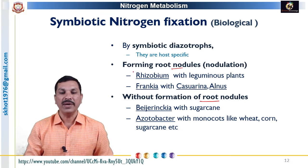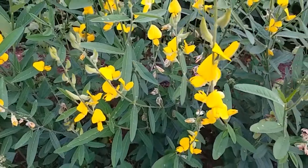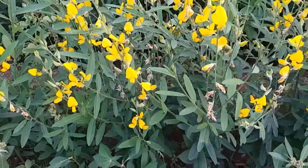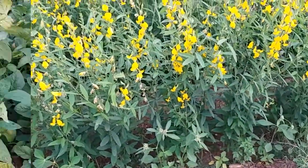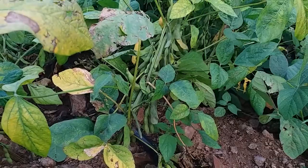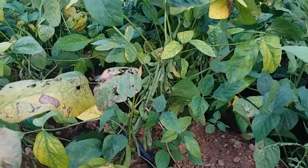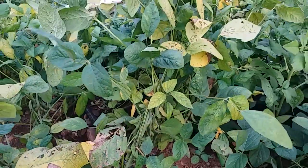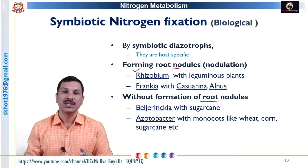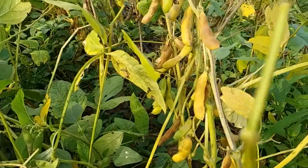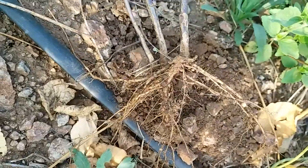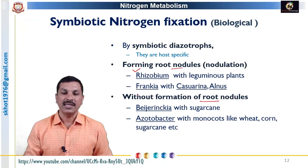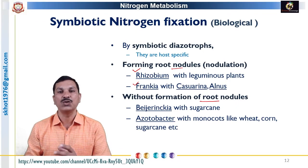In nodule-forming bacteria, a common example is Rhizobium, which forms a specific association with leguminous plants such as soybean, groundnut, chickpea, redgram, cowpeas, and Pisum sativum. All these are examples of leguminous plants, and we can see the root nodules on their root systems. The second example is Frankia, which forms root nodules on large trees like Casuarina.